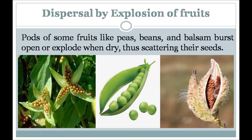Dispersal by explosion: Some seeds have pods which burst open when dry, throwing the seeds far away from the parent plant. This mode of dispersal is called explosion — it causes seeds to be thrown away rather than falling below the parent plant. For example, peas and beans. So plants cannot move around and take their seeds to different places, and nature has developed other methods to disperse their seeds.